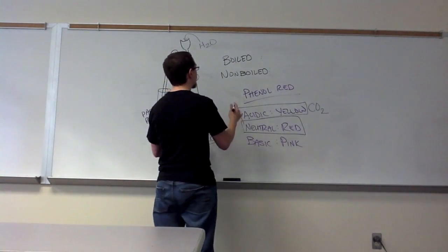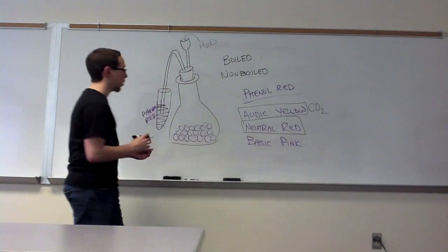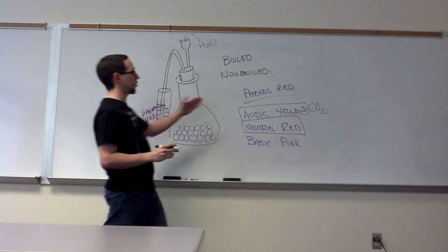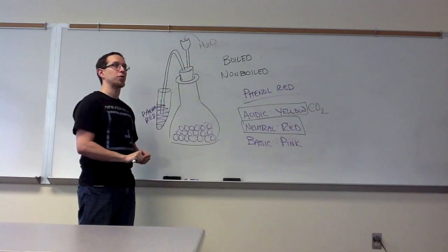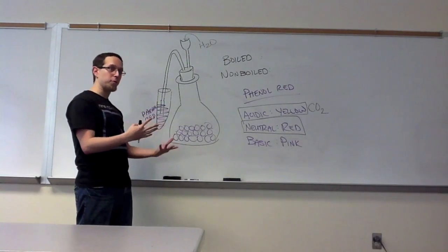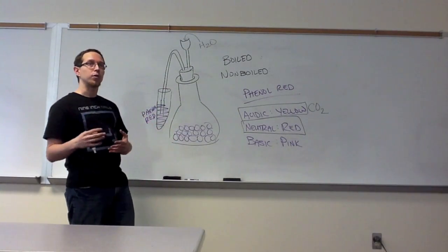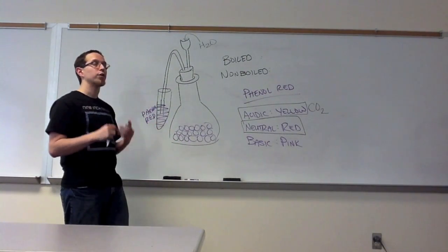What we found at the end of this whole exercise was if it turned yellow, CO2 was produced. If it stayed red, CO2 was not produced. So the germinating peas in theory should be performing respiration. Those that were not germinating any longer should not.